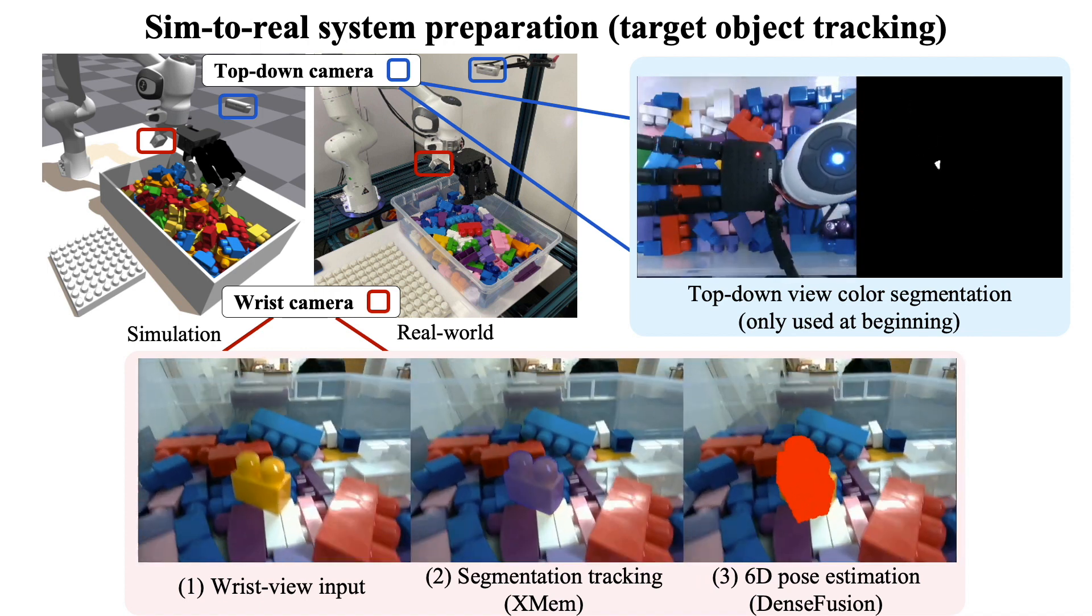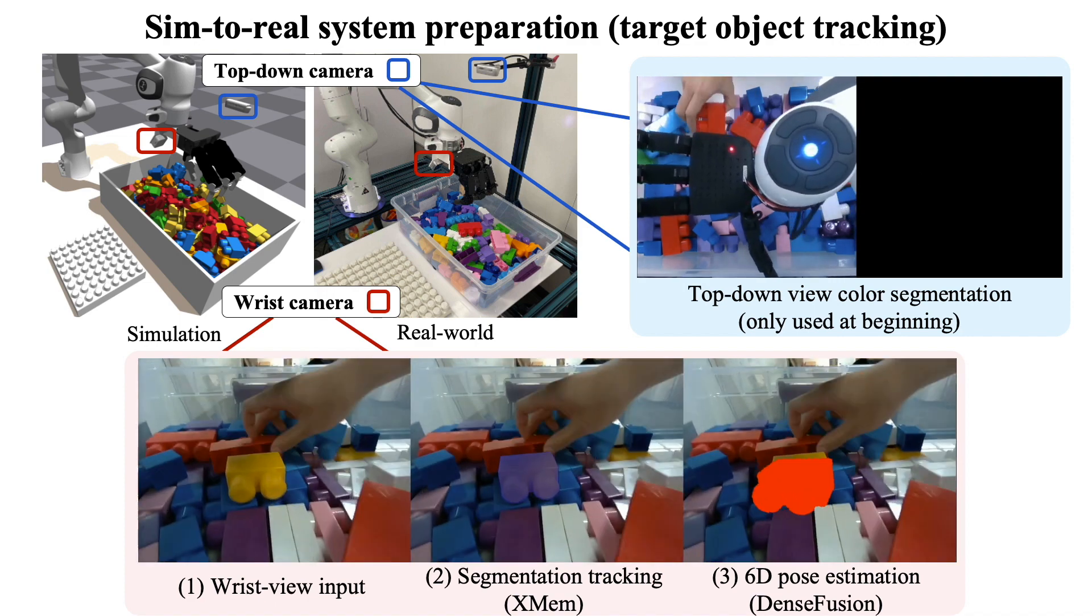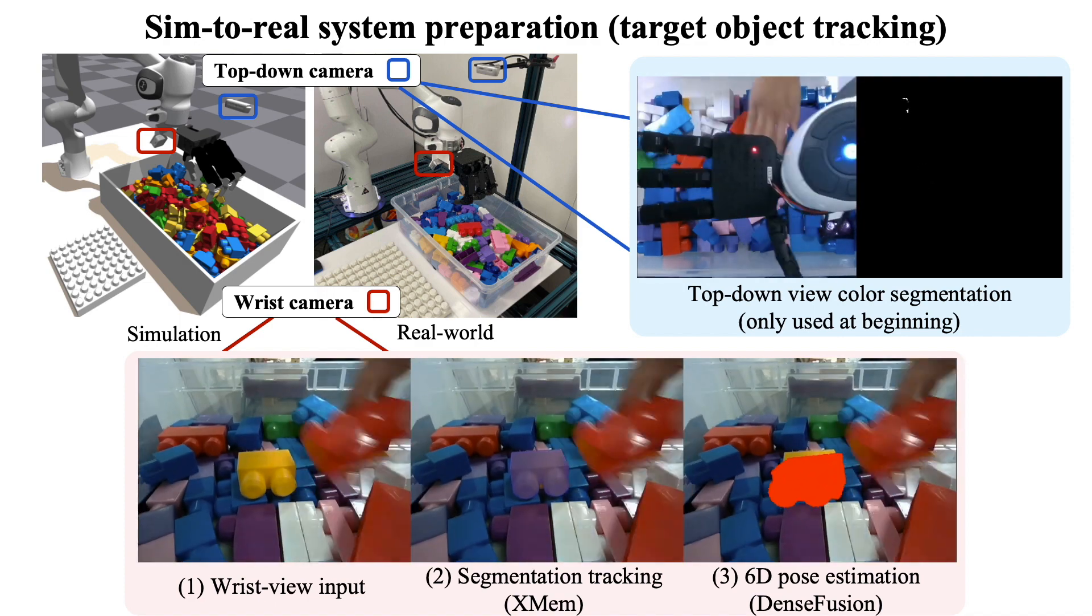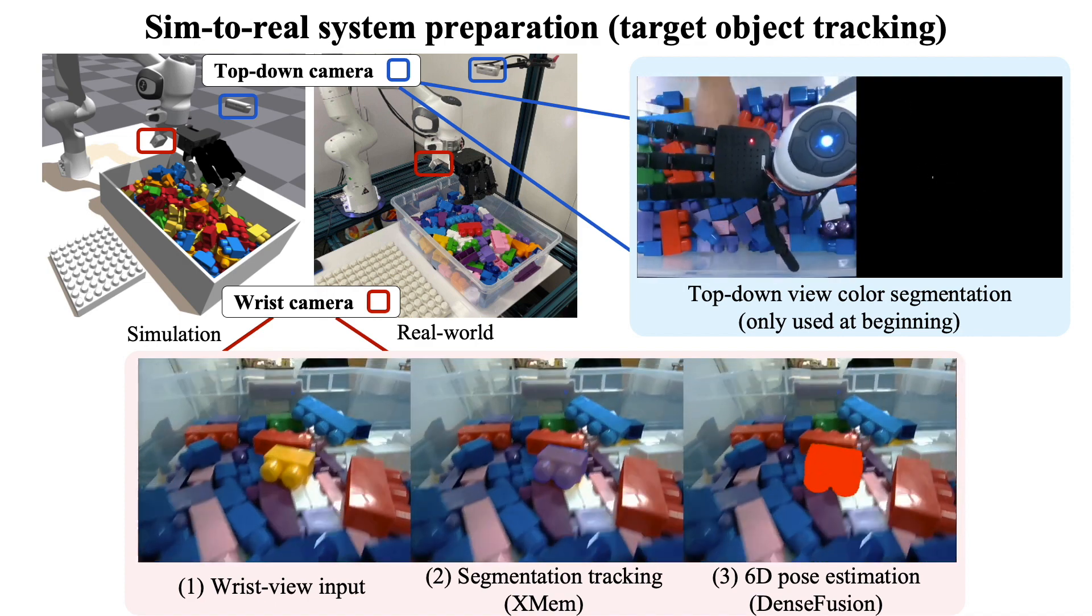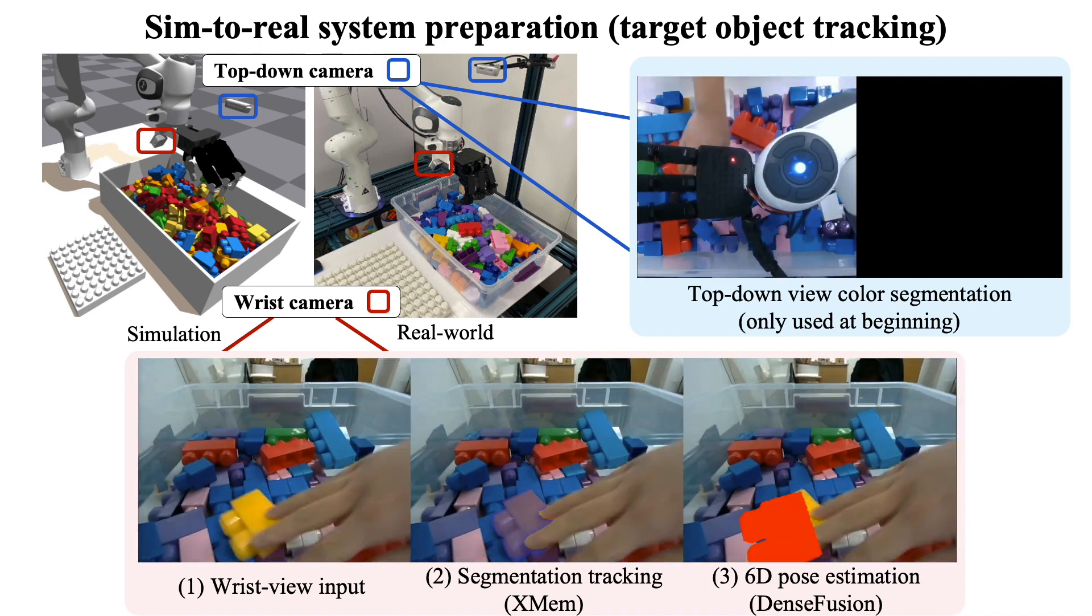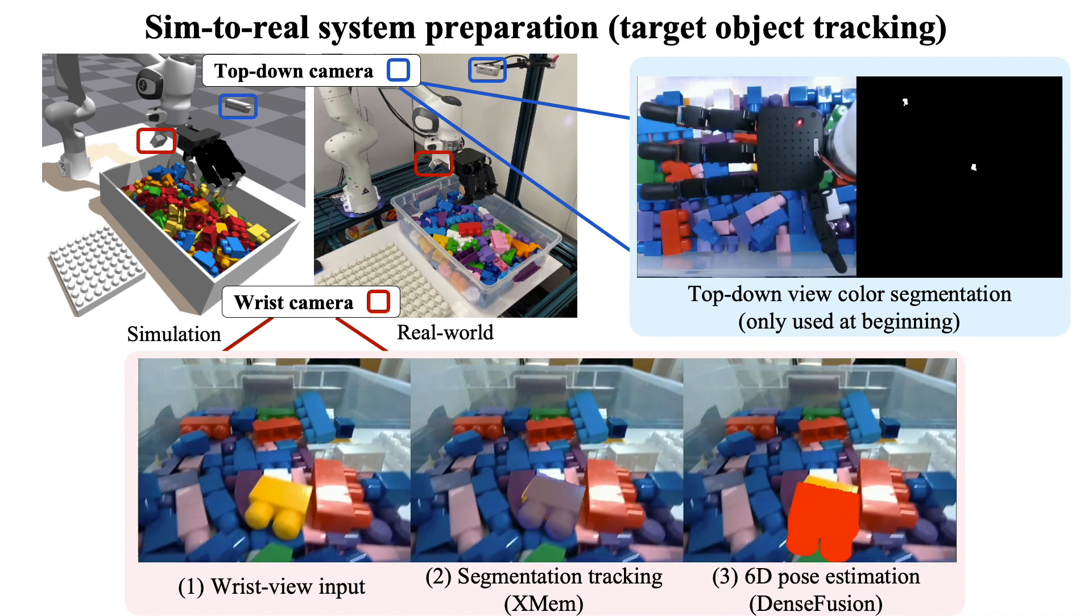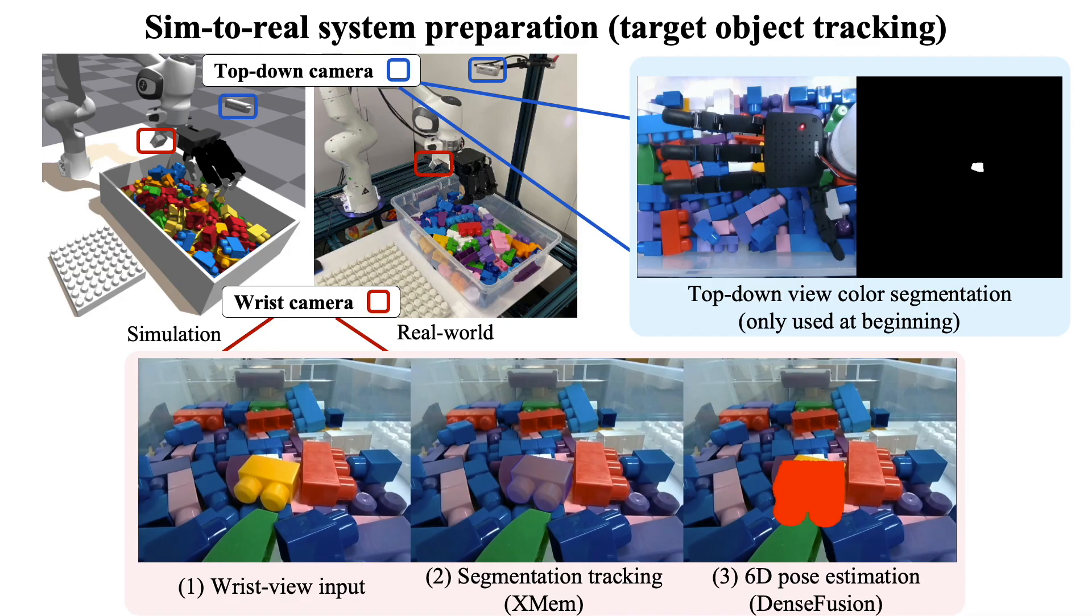Then, we use a color-based segmentation method to localize the target block in the wrist view and use XMEM to track the segment. Based on the segmentation RGBD inputs, DenseFusion is used to estimate the 6D pose of the block in real-time.